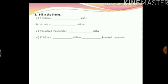Here is another interesting question. The first question is: 7 million equals how many lakhs? We just discussed the relation between the Indian and the international place value systems. So 7 million in the international place value system will be 70 lakhs in the Indian place value system. Similarly, 10 lakhs in the Indian place value system equals 1 million in the international place value system.